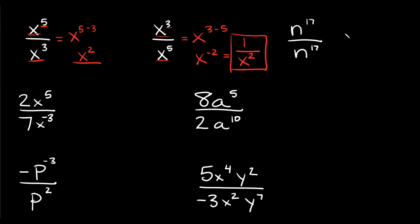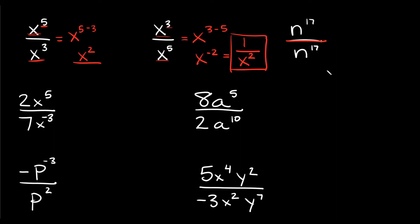So let's do one more kind of easy-ish example right here. We have n to the 17 over n to the 17. Now, anything divided by itself is equal to 1 — but of course your teacher's not going to accept that. You've got to show your work.